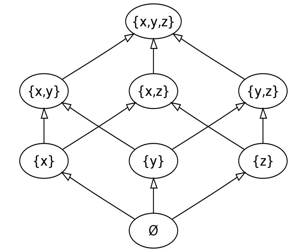The power set of a set S forms an abelian group when considered with the operation of symmetric difference, with the empty set as the identity element and each set being its own inverse, and a commutative monoid when considered with the operation of intersection. It can hence be shown that the power set considered together with both of these operations forms a Boolean ring.